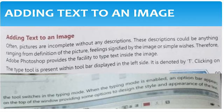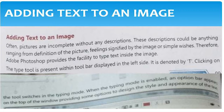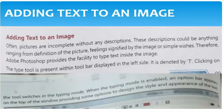Next one is adding text to an image. Often pictures are incomplete without any descriptions. These descriptions could be anything ranging from the definition of a picture, feelings, significance of images, or simple wishes. Adobe Photoshop provides this facility to type text inside the image. The type tool is present in the toolbar displayed on the left side, denoted by the letter T.